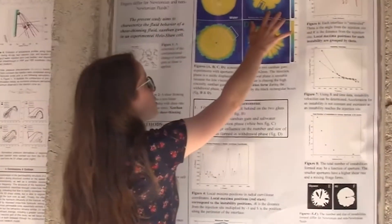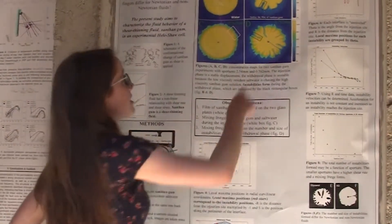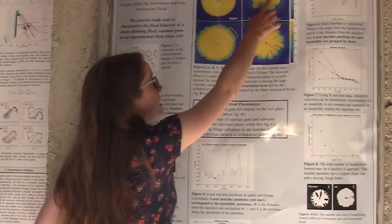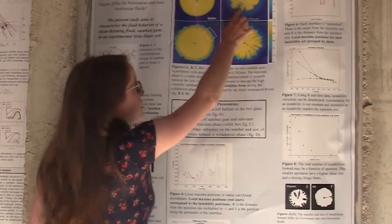That's going to be the withdrawal phase over here. Now, what's interesting about the withdrawal phase is that we have a less viscous fluid, the salt water, chasing the higher viscous xanthan gum. So we have an unstable interface where instabilities are forming.